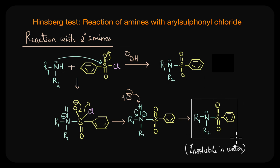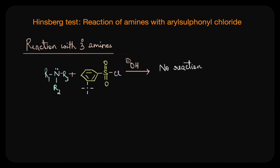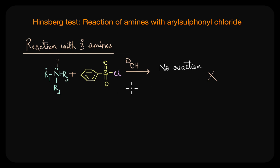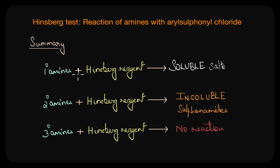What about tertiary amines? Tertiary amines do not undergo this reaction at all. When a tertiary amine reacts with benzene sulfonyl chloride, because it does not have a hydrogen atom or an N–H bond, no sulfonamide product is produced. Since there is no reaction, the visual cue is that no solid precipitate forms and the solution remains clear throughout. To summarize: primary amines react with Hinzberg reagent to first form an insoluble sulfonamide, which then reacts with excess alkali to form a soluble salt.